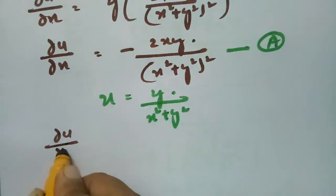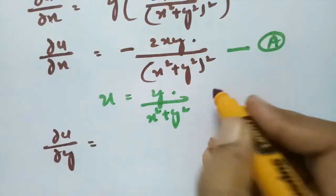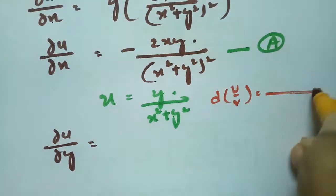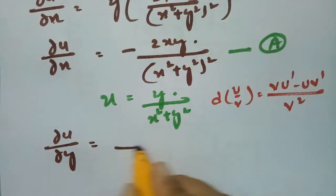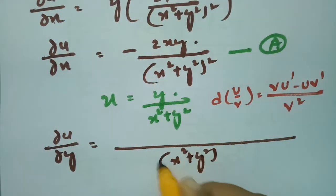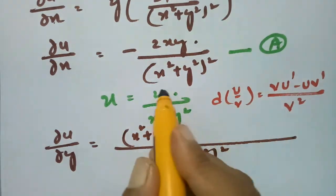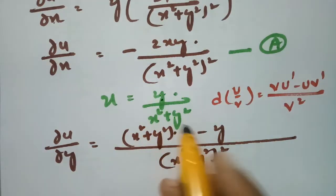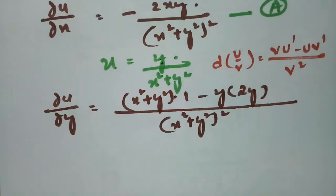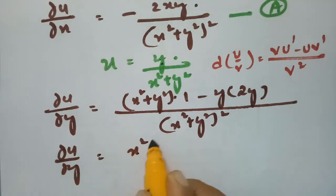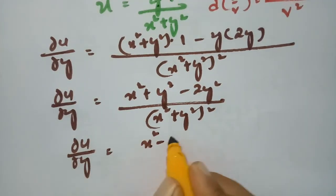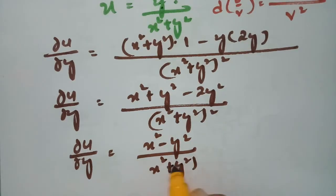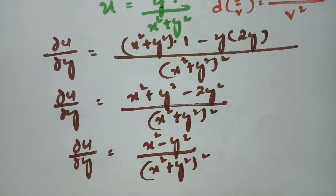Next I differentiate u = y/(x²+y²) with respect to y using the quotient rule: (v·u' - u·v')/v². The denominator is (x²+y²)², the derivative of y with respect to y is 1, and the derivative of (x²+y²) with respect to y is 2y. Therefore ∂u/∂y = (x²+y²-2y²)/(x²+y²)² = (x²-y²)/(x²+y²)², which is equation (b).